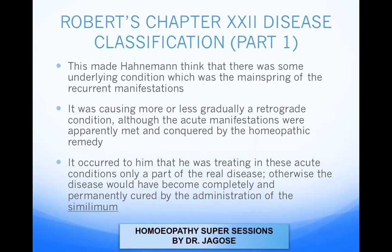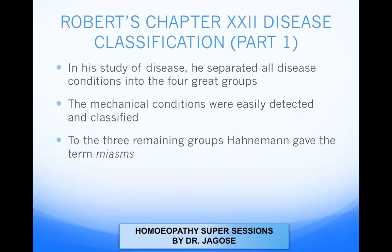It occurred to him that he was treating in these acute conditions only a part of the real disease; otherwise the disease would have become completely and permanently cured by the administration of the similimum. In his study of disease, he separated all disease conditions into four great groups. The mechanical conditions were easily detected and classified; to the three remaining groups Hahnemann gave the term miasms: psora, syphilis, and psychosis.